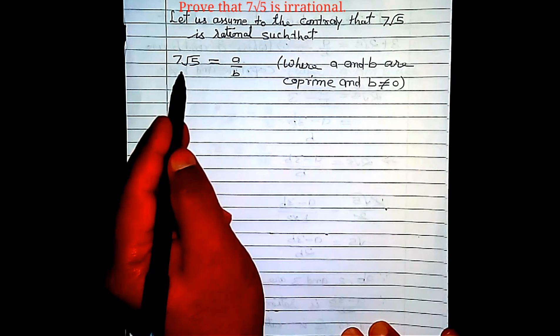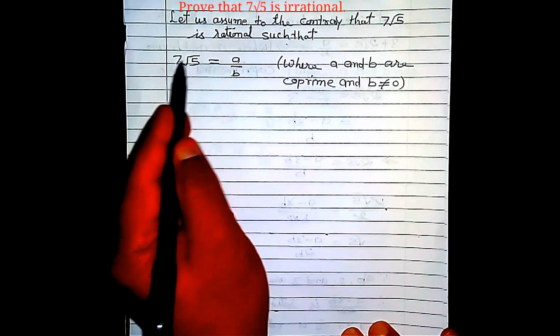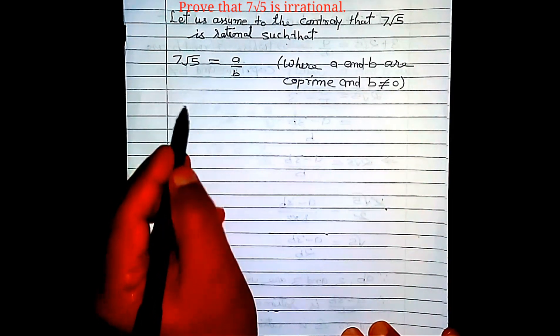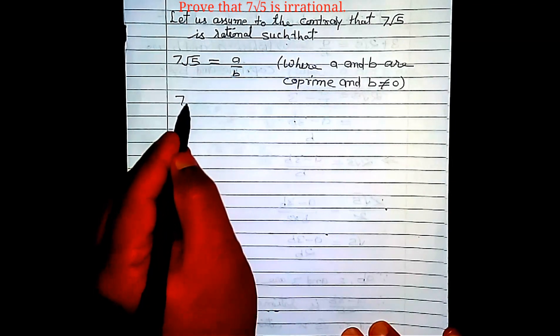So let us multiply both sides of this equation by 1/7 to get 7√5 multiplied by 1/7.